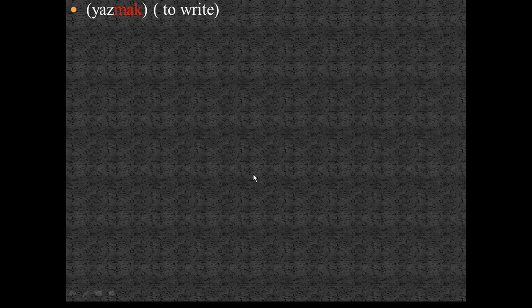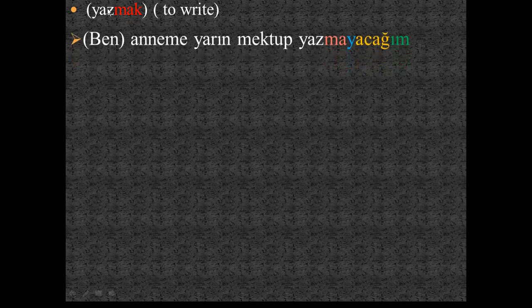Now let's do some practice. Our sample verb is 'yazmak' in infinitive form. We take the verb root 'yaz.' The sentence is: 'Ben anneme yarın mektup yazmayacağım.' This is the negative form. After the verb root 'yaz,' the negative suffix 'ma' is added because of the last vowel 'a.'